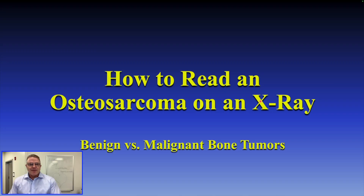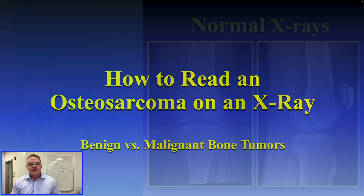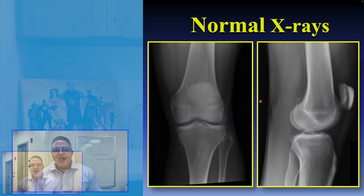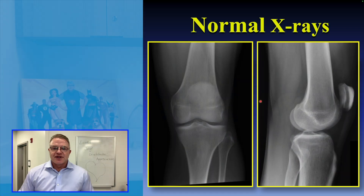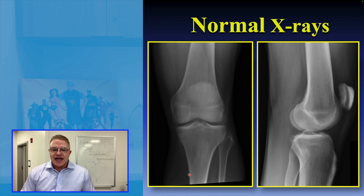Let's talk about how to read an osteosarcoma on an x-ray and look at the difference between benign and malignant bone tumors. They all have distinctive appearances. This is what normal x-rays look like — this is an AP x-ray of a knee.